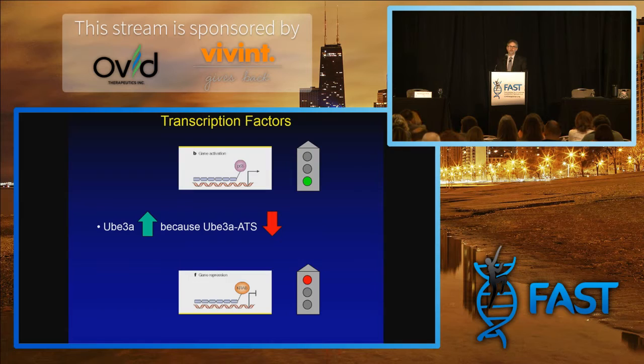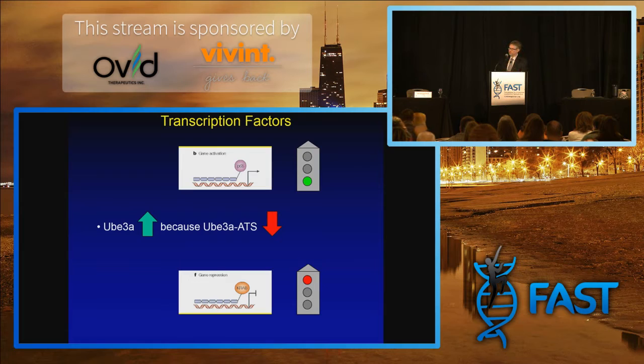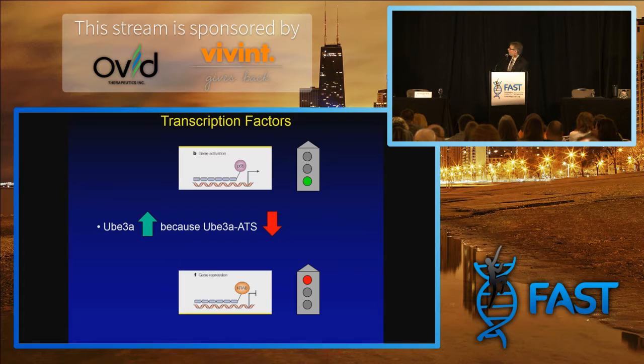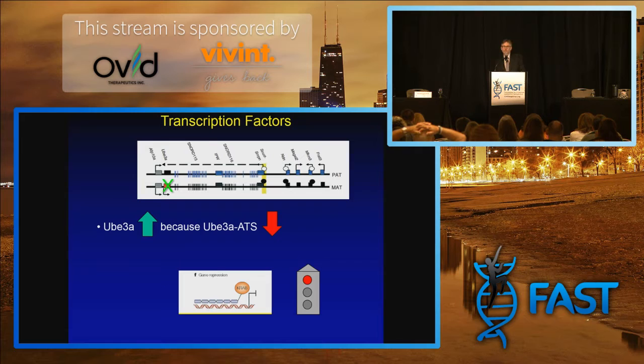One of the ways that our cells regulate which genes are turned on or turned off is through the use of transcription factors. A transcription factor is a protein that will bind to a piece of DNA near a gene, and it can either activate that gene or turn that gene off. We are trying to use the same kind of tools that nature is already using in the case of Angelman syndrome, by designing the DNA binding domain so we can direct them to a specific part on the DNA.